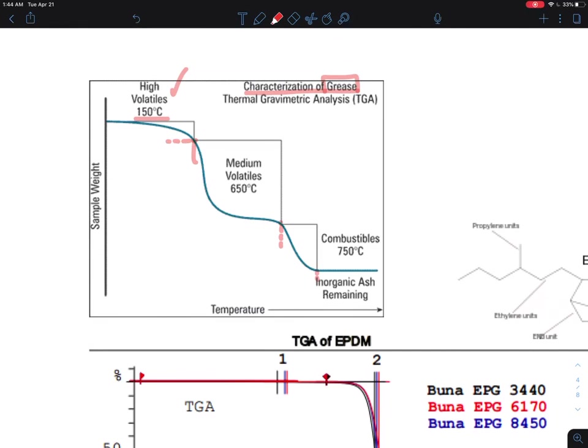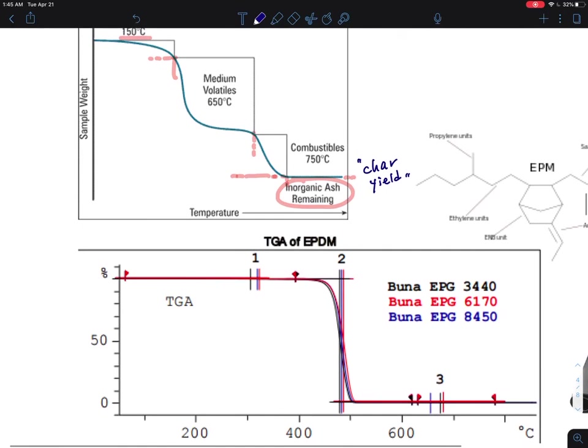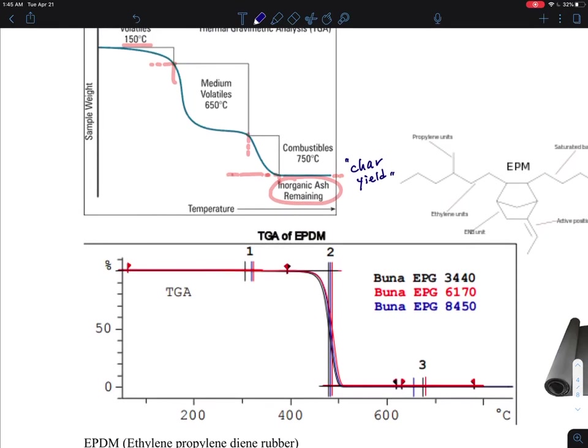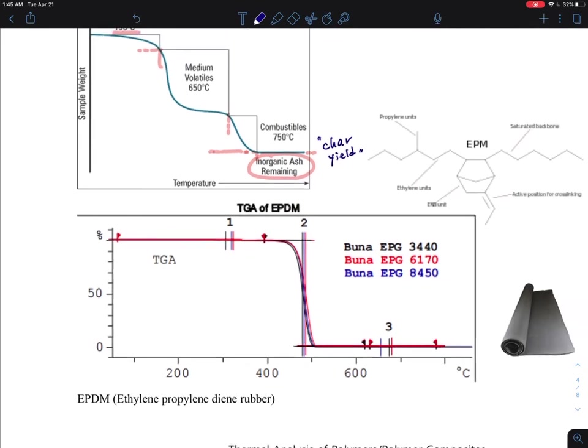And what is interesting is, also, is what is called the inorganic ash remaining. When you have those burned off, sometimes you have some, something called inorganic ash, or sometimes they call it, this is a char yield. And how many percent of the sample remaining, maintain the temperature, maintain the weight until, although you heat it up to such a high temperatures.